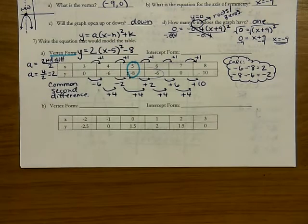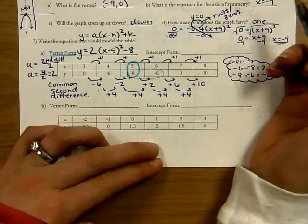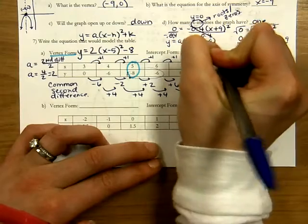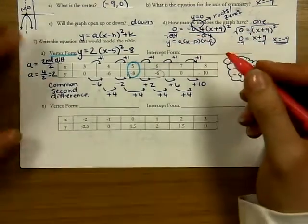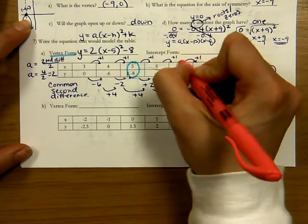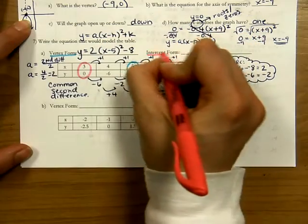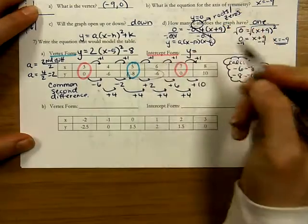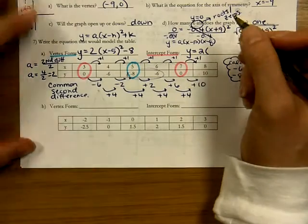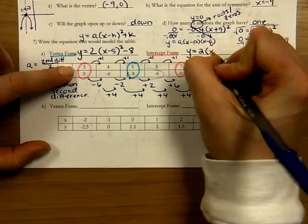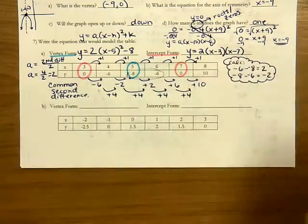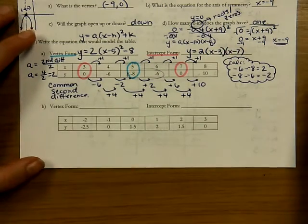To write it in intercept form — y equals a times x minus p times x minus q — I need the x-intercepts, which are where y equals 0 in the table. One x-intercept is at x equals 3 and the other is at x equals 7. So the intercept form equation is y equals 2 times x minus 3 times x minus 7.